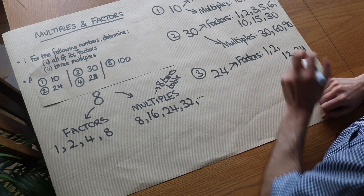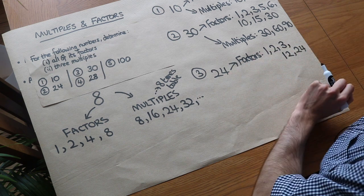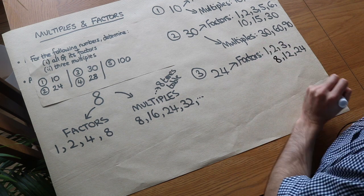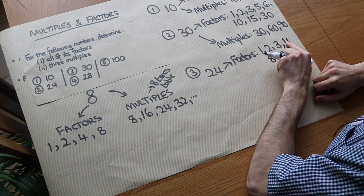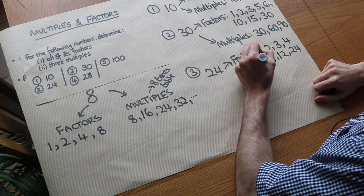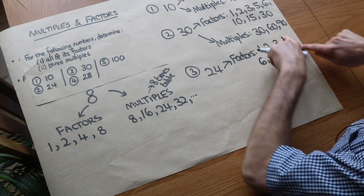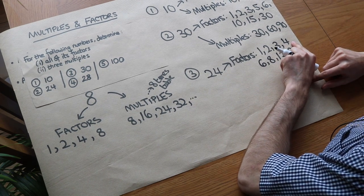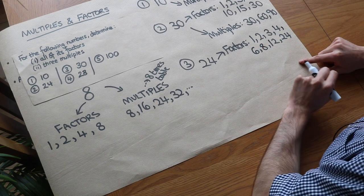What about 3? It goes into 24. 3 times what is 24? 24 divided by 3 is 8, so 8 is a factor. Then 4: 4 goes into 24, and 4 times 6 is 24, so 6 is a factor. Can you see we're gradually meeting in the middle — up to 4 and down to 6? We just need to try 5: 5 doesn't go into 24, so we've found all our factors. That's quite a neat little trick!